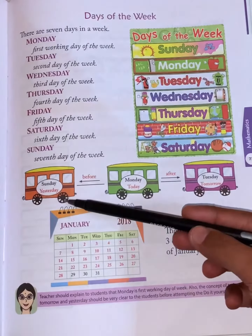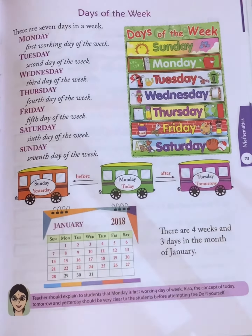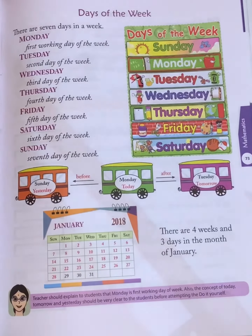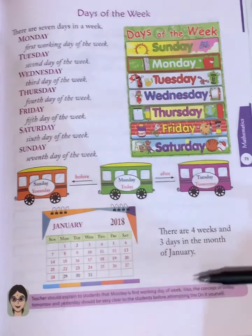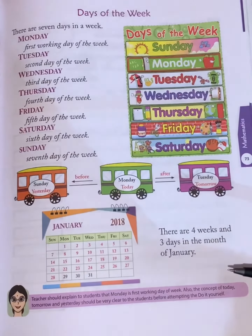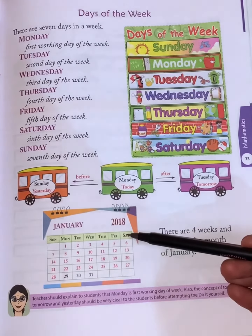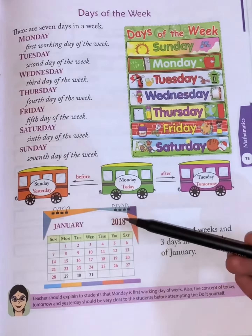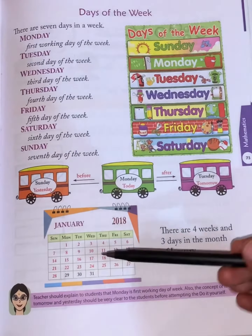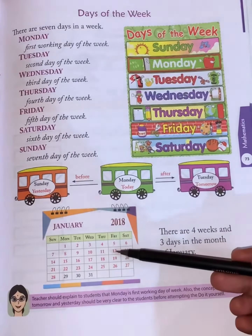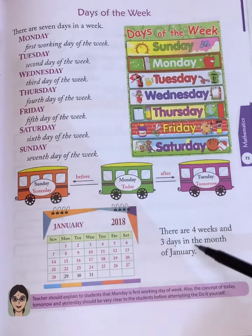Days of the week: there are seven days in a week — Monday, Tuesday, Wednesday, Thursday, Friday, Saturday, Sunday. These are given in sequence: Monday is the first day, Tuesday is the second day, Wednesday is the third day, Thursday is the fourth day, Friday is the fifth day, Saturday is the sixth day, and Sunday is the seventh day.